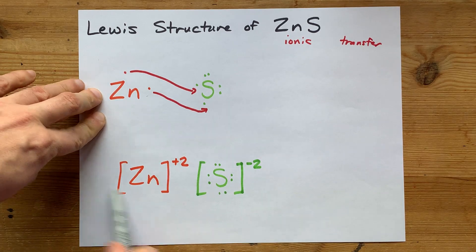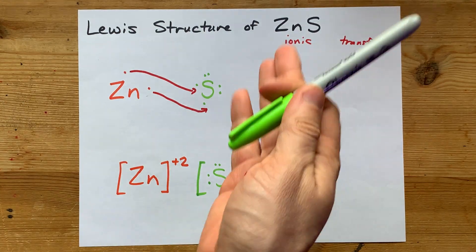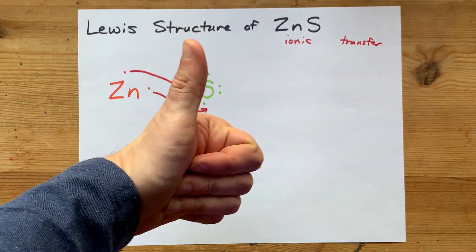This here is what you came for. That's the Lewis structure for an ionic compound, zinc sulfide specifically. Thanks for sticking with me, and best of luck.